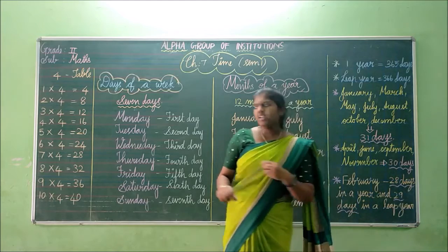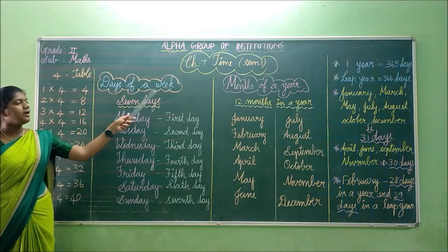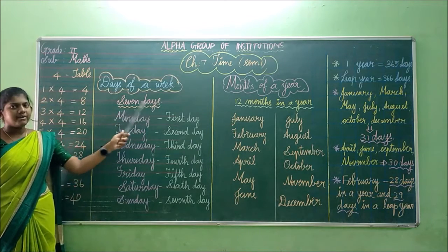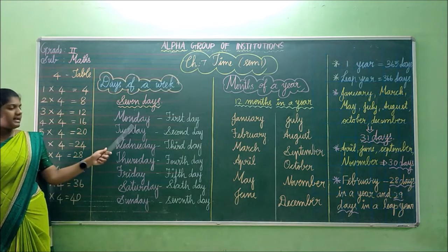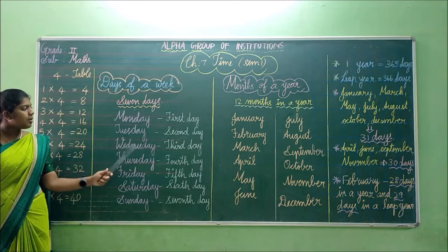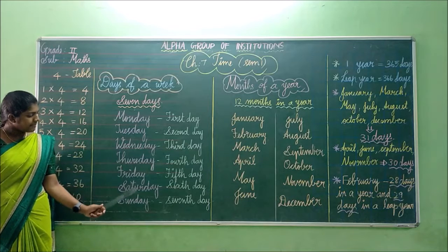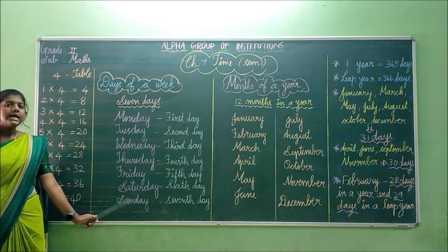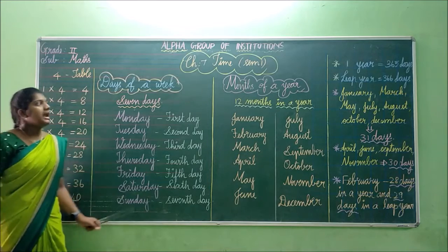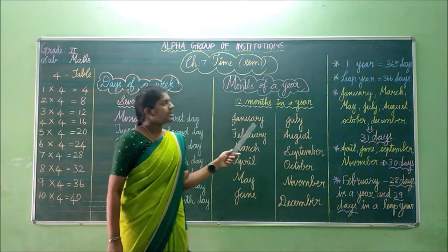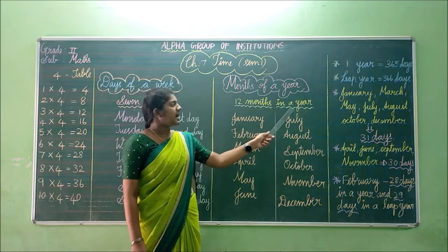Let's check what is correct. Days of a week — there are 7 days in a week. They are Monday, Tuesday, Wednesday, Thursday, Friday, Saturday and Sunday. How many days? 7 days.